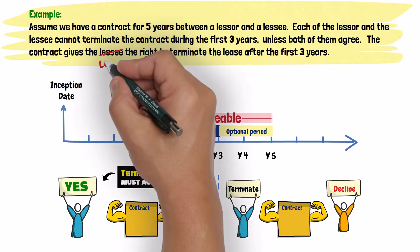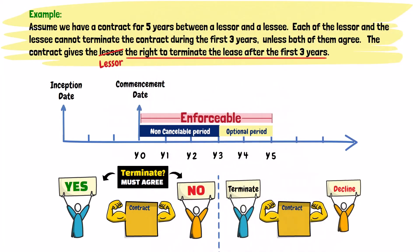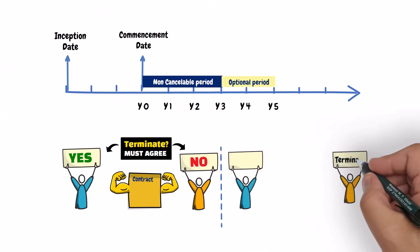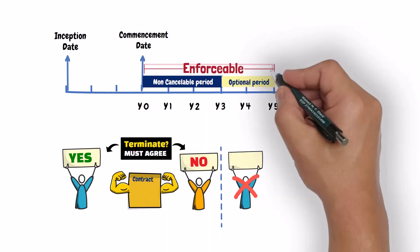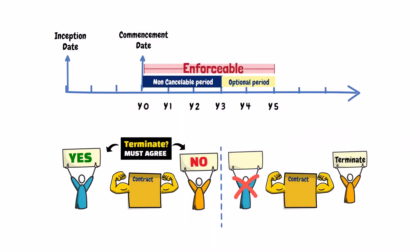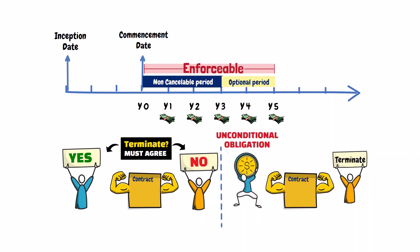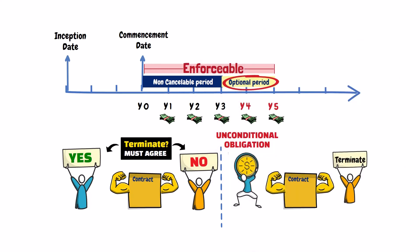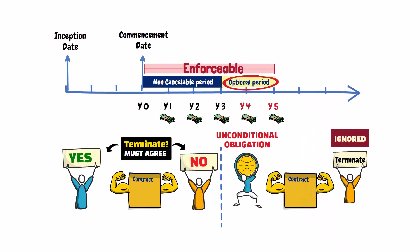Let's assume in our example that the lessor, and not the lessee, has the right to terminate the lease after the first three years. Things are different here. Although the lessor has the right to terminate the lease after the first three years without the lessee's consent, the lease is still considered enforceable from the perspective of the lessee for the whole contract period of five years. This is because the lessee has an unconditional obligation to pay the lease payments for the whole five years, including the remaining two years of the optional period, unless the lessor chooses early termination. So the lessor's right to terminate the lease is ignored, and the contract is enforceable for the full five years from the perspective of the lessee.